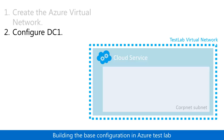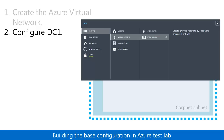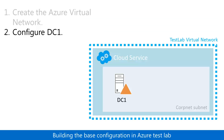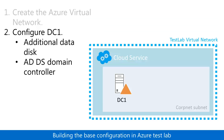In step two, you use the Azure Management Portal to create a new virtual machine named DC1. You then configure it with an additional data disk, as an ADDS domain controller for the corp.contoso.com domain, as a DNS server, and then add a user1 account.